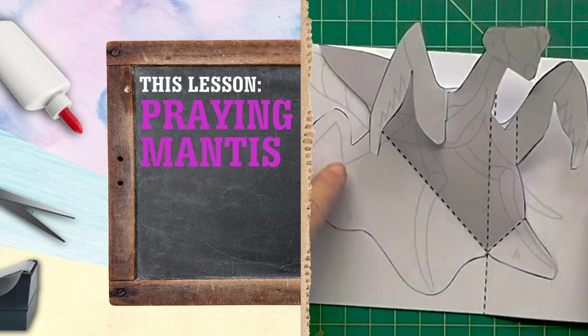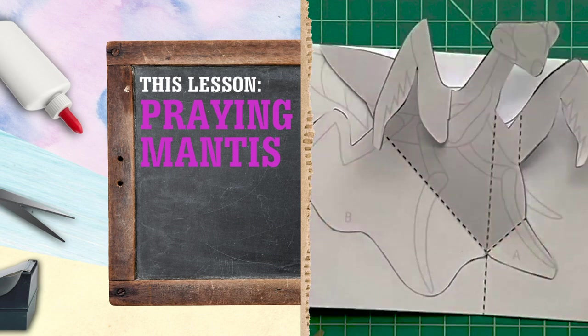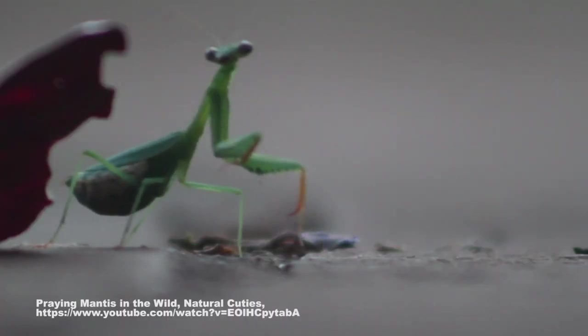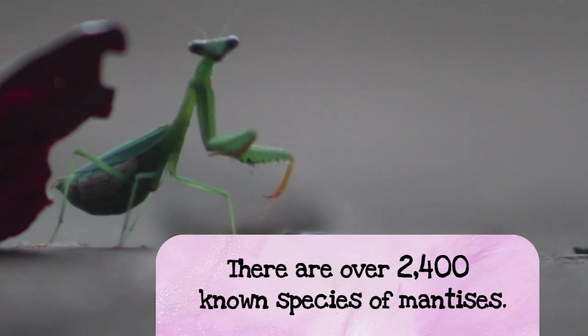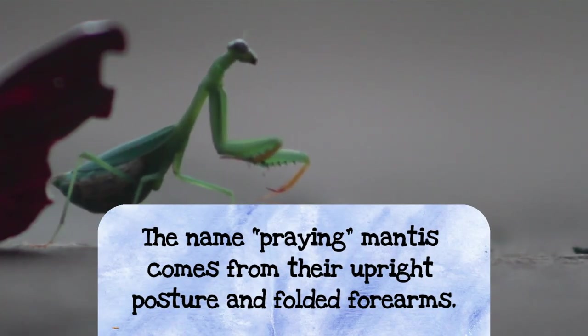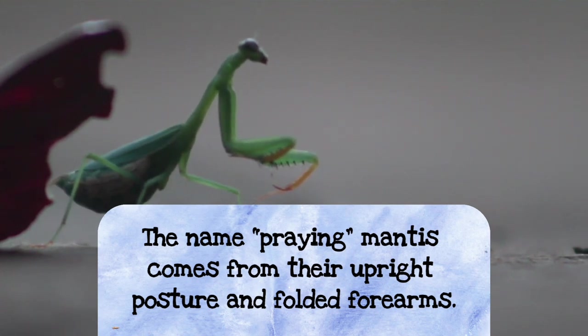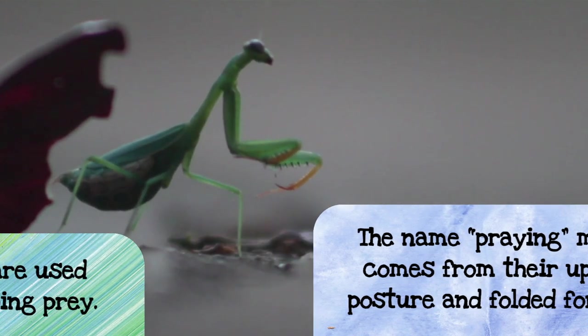First one we're going to do is a praying mantis. Just some quick facts: there are over 2,400 known species of mantises, and they're called praying mantises because it looks like they're praying. Look at their posture, they're upright with folded forearms and they stand really still.